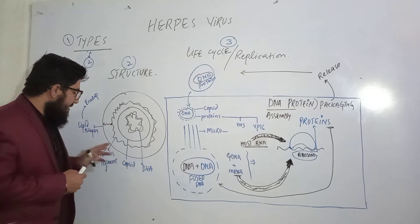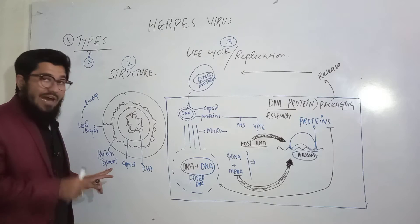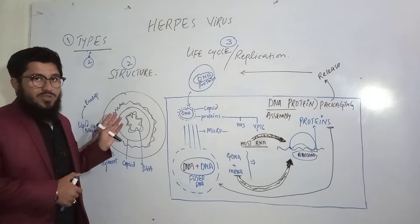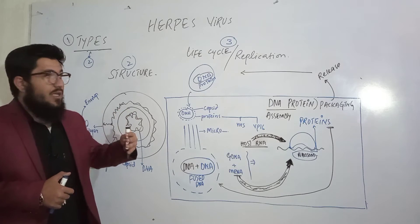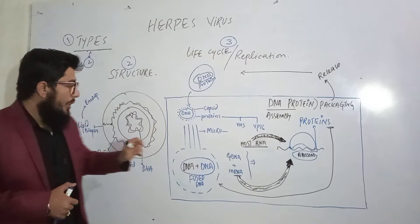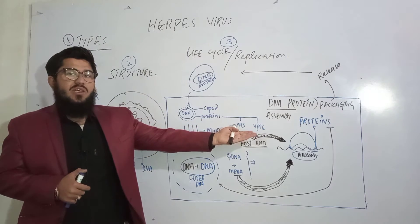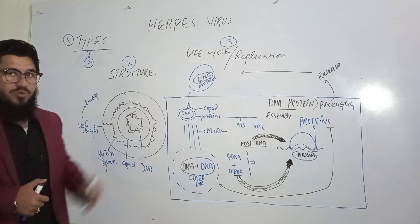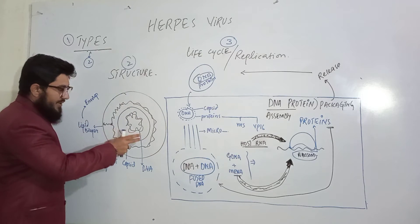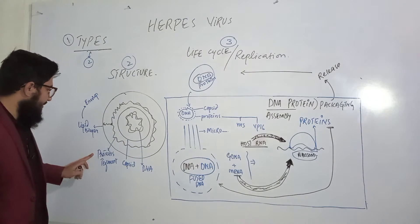The next layer is again made of proteins — that is the tegument protein. Remember, there are several other proteins here not always marked in textbooks but taught during the life cycle or replication. Along with tegument proteins, we also have some other proteins like VHS and VP16. These proteins cover the nucleocapsid — meaning the DNA and capsid.